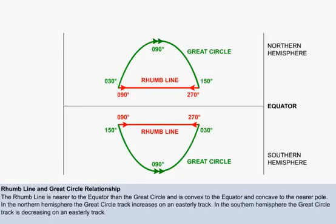When flying in an easterly direction in the southern hemisphere, it can be seen that the great circle track is decreasing from 150 degrees to 030 degrees. When flying westerly, the opposite occurs. The great circle track is decreasing in the northern hemisphere and increasing in the southern hemisphere.